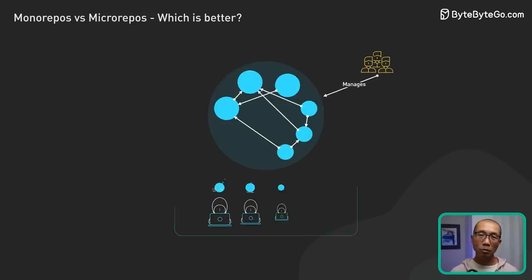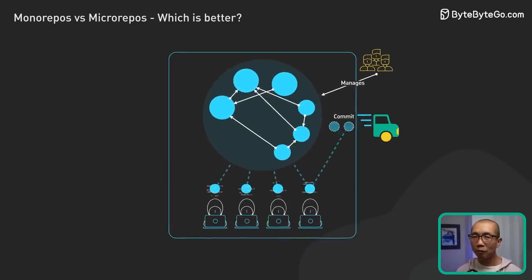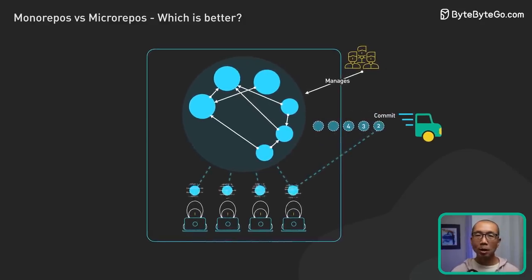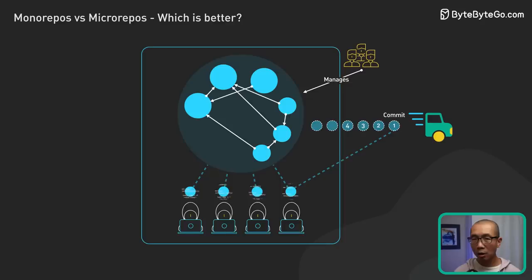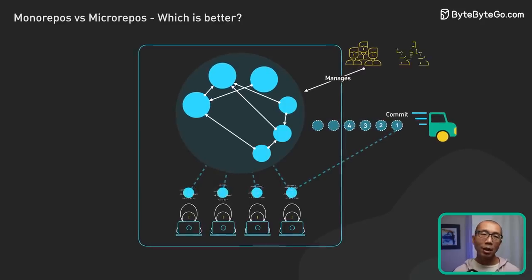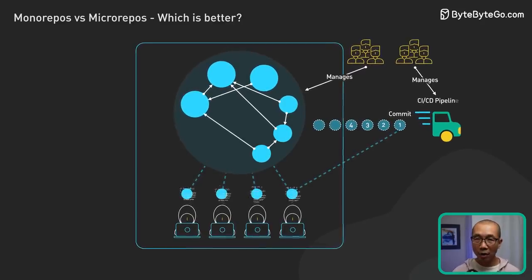And as the repo grows, without careful management, the CI-CD pipelines might start moving at a snail's pace. This is another area that requires a heavy level of staffing.